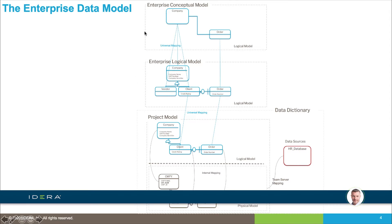We've got two parts to our enterprise model: an enterprise conceptual model and an enterprise logical model. The conceptual model has a smaller number of entities — it's really a summary of the core information concepts, components, master data entities, and critical data elements. You may or may not have attributes or relationships between them, but it gives you a high-level summary of the information of the organization.